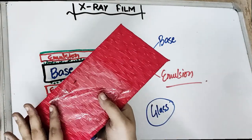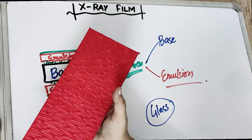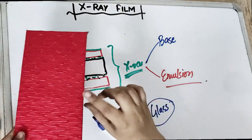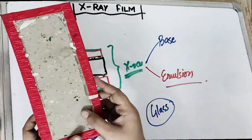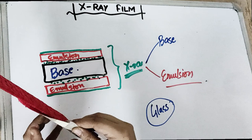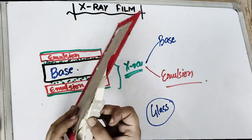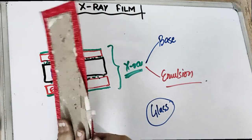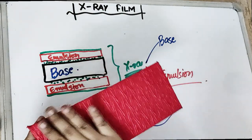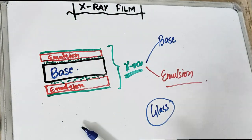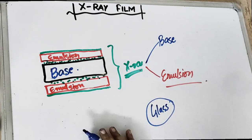Let me show you the structure. Suppose this is the x-ray film — on the top layer we have got a super coat. If we look at both sides, we have got emulsion. And once you see in between the two emulsions we have got the base layer. Then on two sides is the emulsion layer, which is joined with the adhesive, and the upper layer is the super coat. These are the components of an x-ray film.